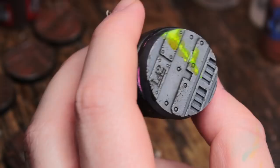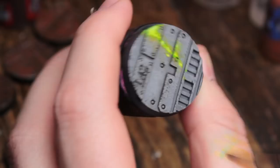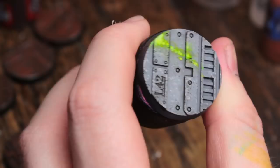Now I'm going to take some Lamenters Yellow and I'm going to glaze this over the entire toxic sludge area. And again, I'm going to use a slightly damp brush just to feather the edges of that Lamenters Yellow so that it blends seamlessly into the surrounding grey tiles.